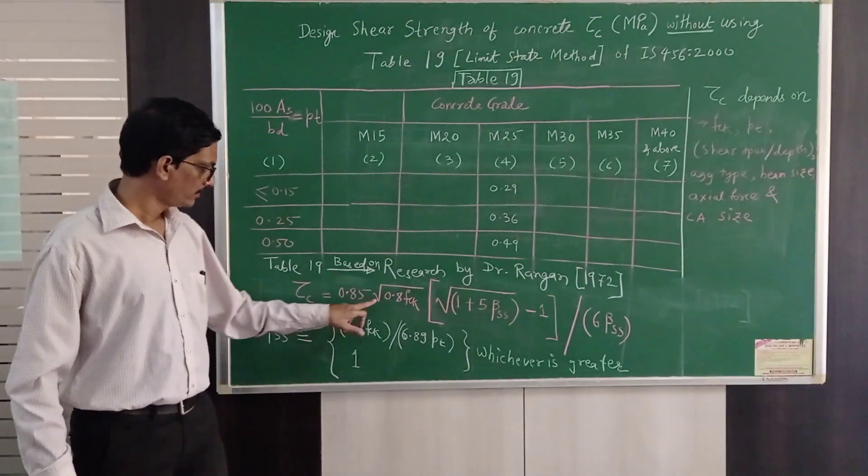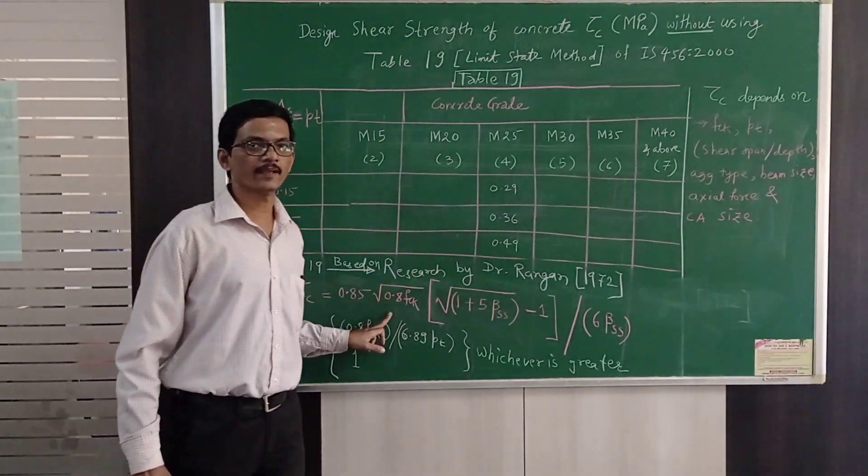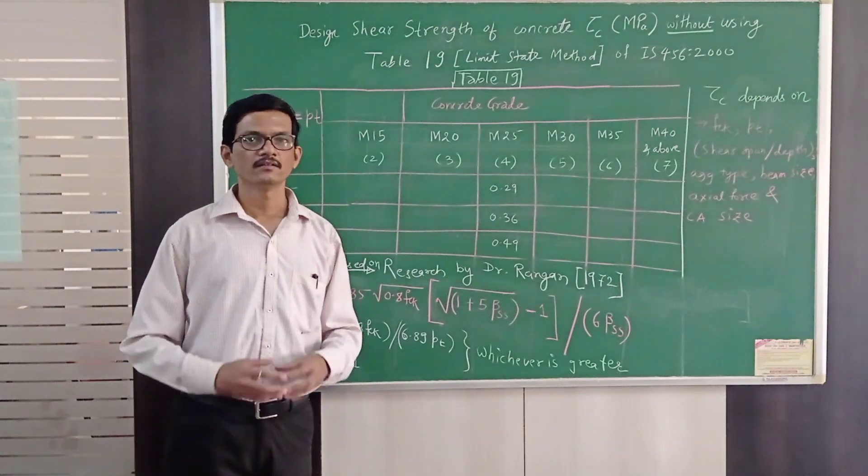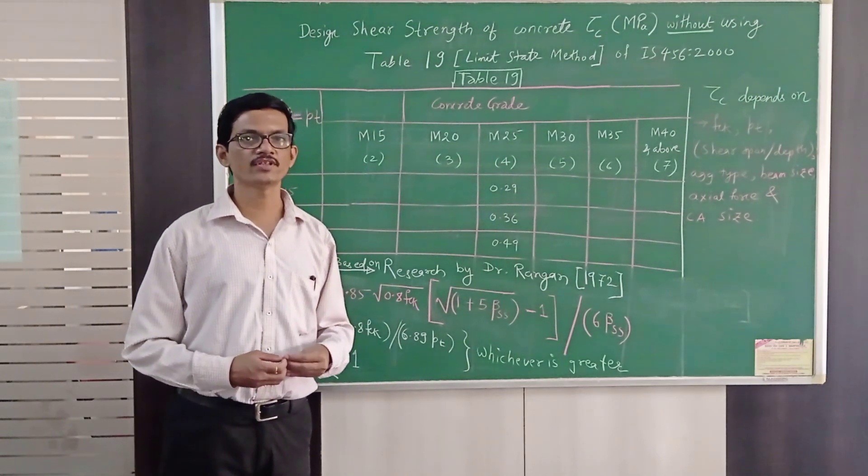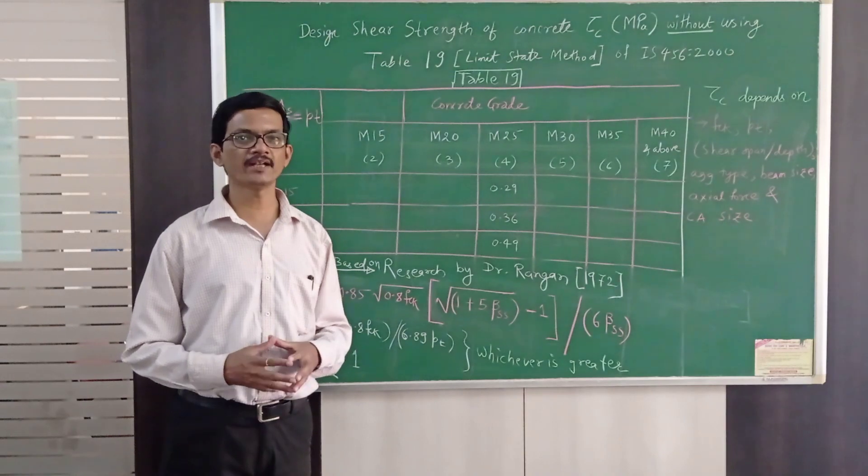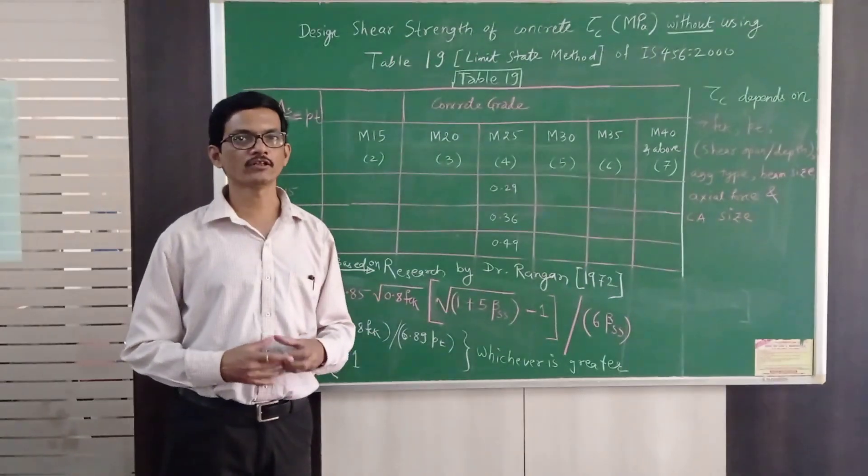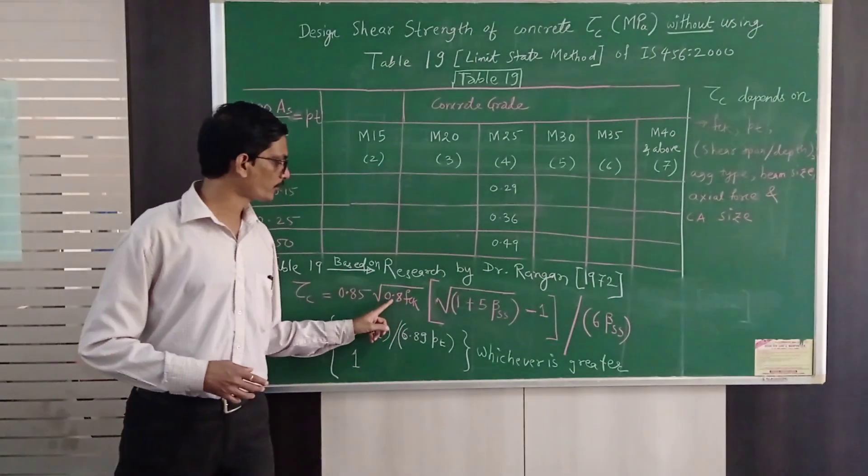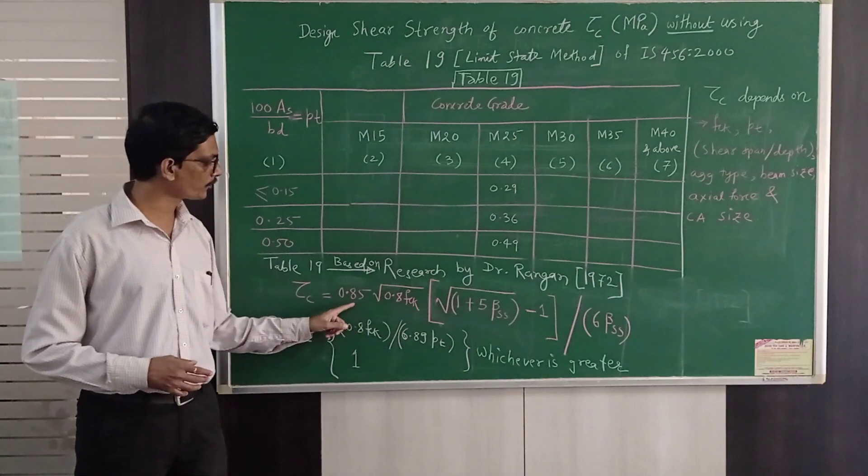Now here this is 0.8 fck because it is well known fact that the compressive strength of cylinder is approximately 0.8 times of that of cubes and therefore it is 0.8 fck.